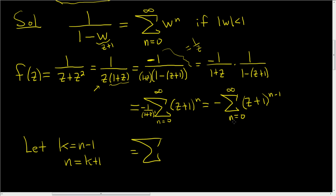well, let's see. When n is 0, k is negative 1. So k will start at negative 1 and it runs all the way to infinity. And then we have z plus 1 to the k. And we still have the negative sign. So that is the final answer.